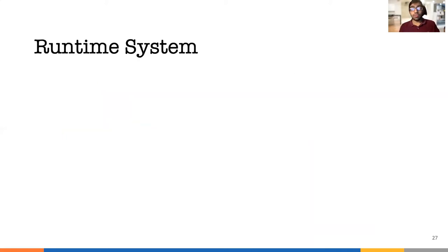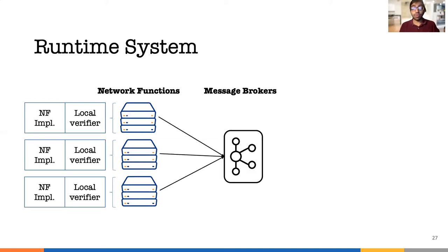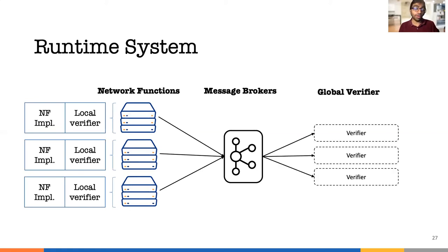After the optimizations, we have a complete runtime system. Network functions also run the local verifier, which filters and suppresses events not needed for invariant checking. The local verifier sends the events to message brokers that distribute the events to the correct global verifier. The global DSFAs are placed separately as they need events from multiple network functions to check for global invariants. The global verifier raises alerts if any violation has occurred.